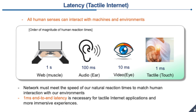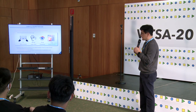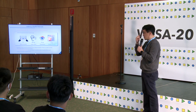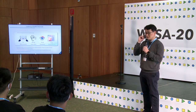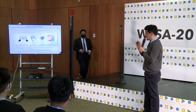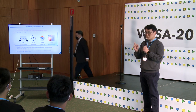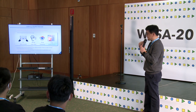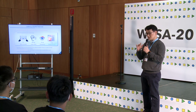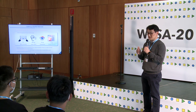This is called the tactile internet, defined by ITU-T in 2015. All human senses can interact with our environments and machines. For example, web browsing needs around one second latency, audio information needs around 100 milliseconds, and video needs 10 milliseconds. But tactile applications, like touch, need one millisecond. So to support tactile applications over the network, we need connections with latency of one millisecond or less.